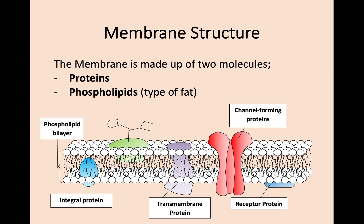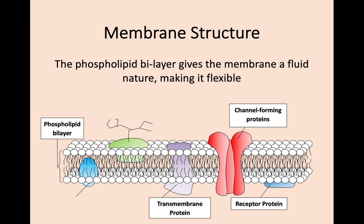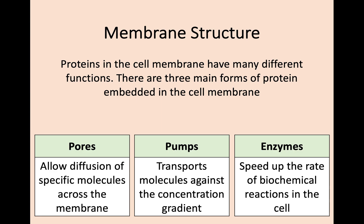Going back to the structure of cell membranes — the cell membrane is made up of proteins and a double layer of phospholipids. This bilayer, or two layers, of phospholipids is what makes the cell membrane quite flexible, and it's something that we call the fluid mosaic model. In Higher, we're going to go a little bit deeper into the function of membrane proteins. There are three forms: pores, pumps, and enzymes.